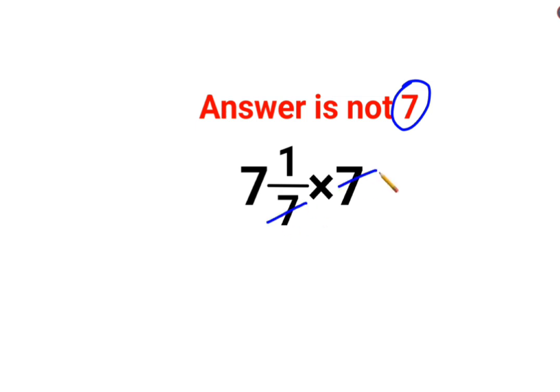A lot of people think that this and this gets cancelled, so you're just left with 7. No. This is a mixed fraction, so you cannot directly cancel the 7 unless you convert it into its improper form.